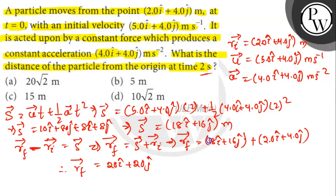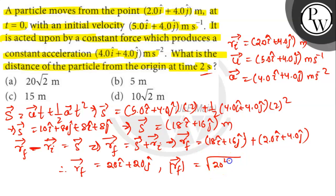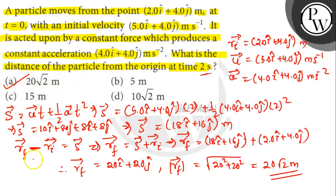Now the distance of the particle from the origin is given by the magnitude of the final position vector at t equals 2 seconds. The magnitude of rf vector equals root over of 20 square plus 20 square, which gives 20 root 2 meter. Therefore, the distance of the particle from the origin at time 2 seconds is 20 root 2 meter. Option A is the correct answer. Thank you.